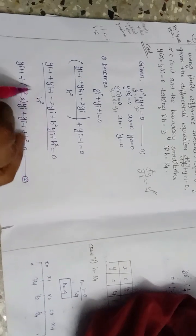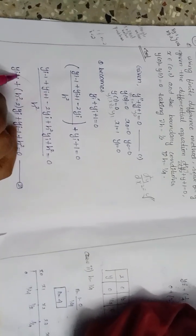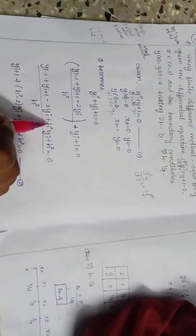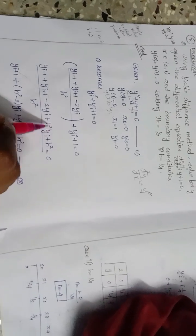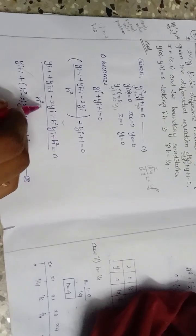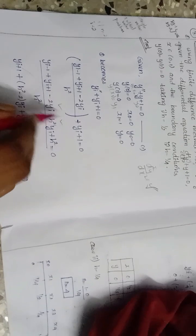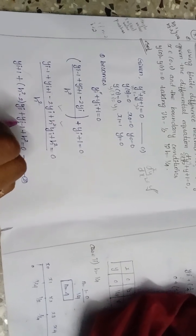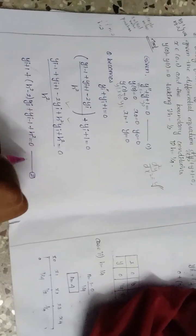Collecting terms, the general equation (equation 2) becomes: y_{i+1} + (h² - 2)y_i + y_{i-1} + h² = 0.